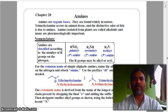For the common name of simple aliphatic amines, name the alkyl groups—methyl, ethyl, propyl—on the nitrogen and attach amine. Use the prefix di- and tri- as needed.